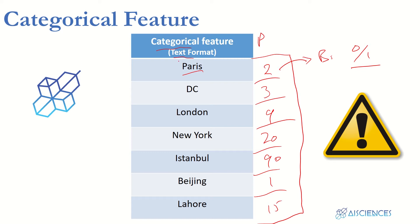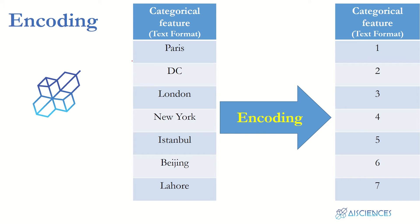Any feature that is in text format is a categorical feature. To use a categorical feature, one approach is to drop it — but dropping it can cause you to lose important information. So how can we deal with it? That's where encoding comes in.